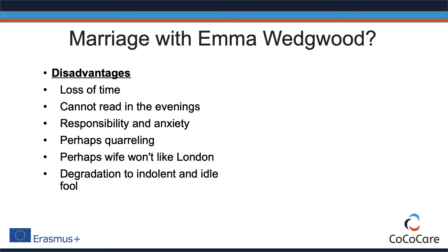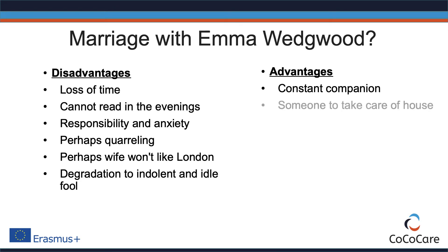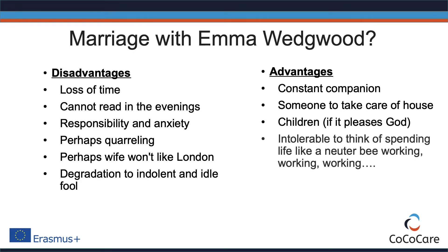But marriage, of course, also has many advantages. One has a constant companion, and there is someone who would take care of the house. Maybe marriage will produce children. Charles Darwin also thought that it is just intolerable to spend life like a neuter bee, just working and working.